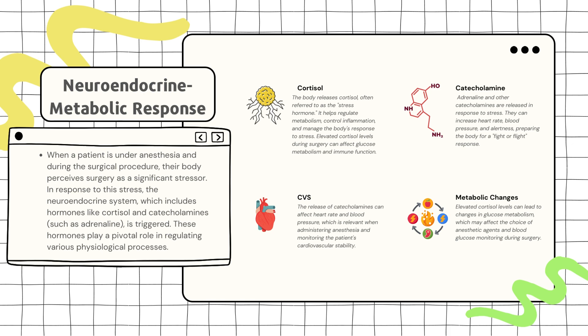Adrenaline and other catecholamines are released in response to stress. They can increase heart rate, blood pressure, and alertness, preparing the body for a fight-or-flight response.